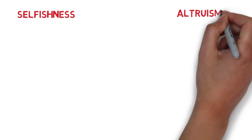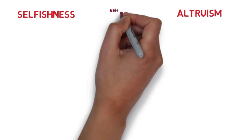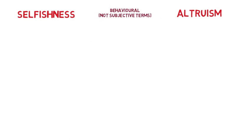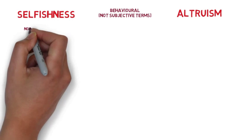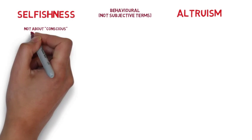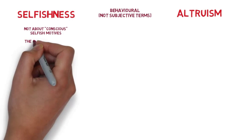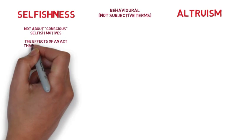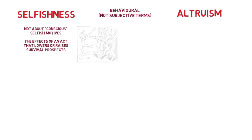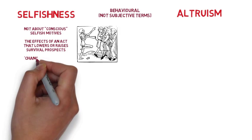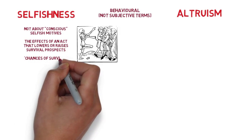In talking about selfishness and altruism, these terms are behavioral, not subjective. This means Dawkins is not concerned about conscious selfish motives. We are just looking at the effects of an act that lowers or raises survival prospects — welfare defined as chances of survival.